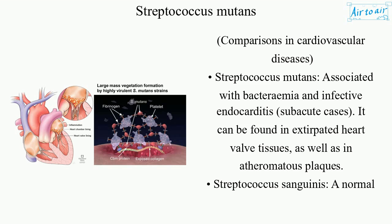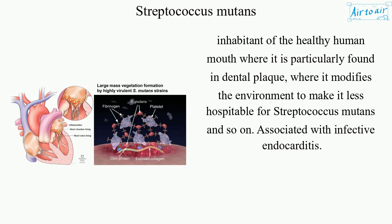Streptococcus sanguinis, a normal inhabitant of the healthy human mouth where it is particularly found in dental plaque, modifies the environment to make it less hospitable for Streptococcus mutans. It is also associated with infective endocarditis.